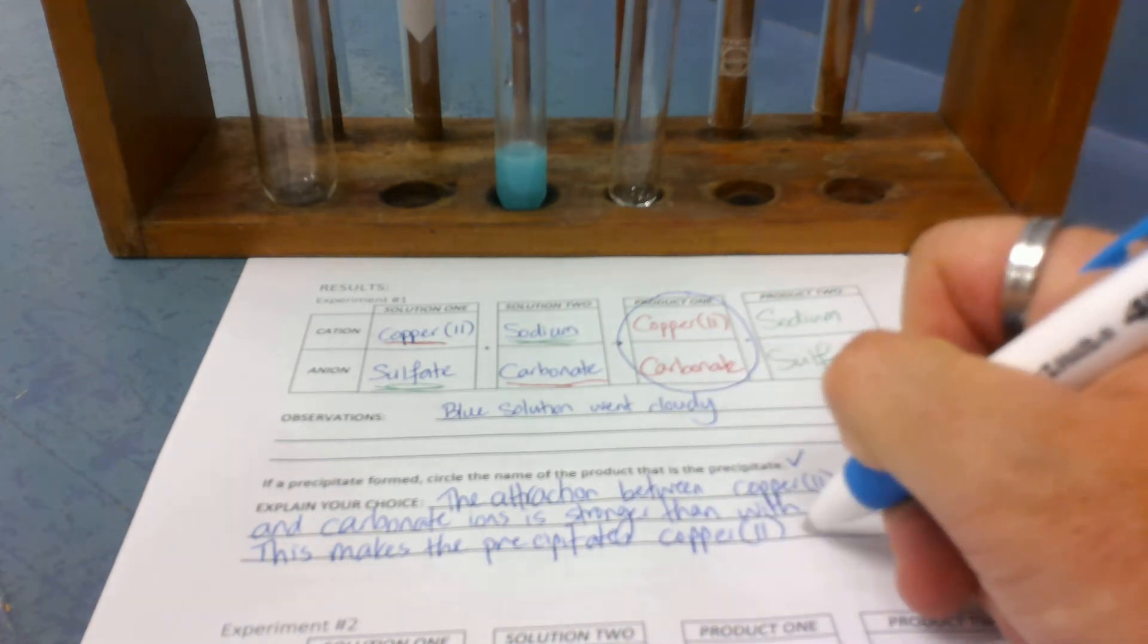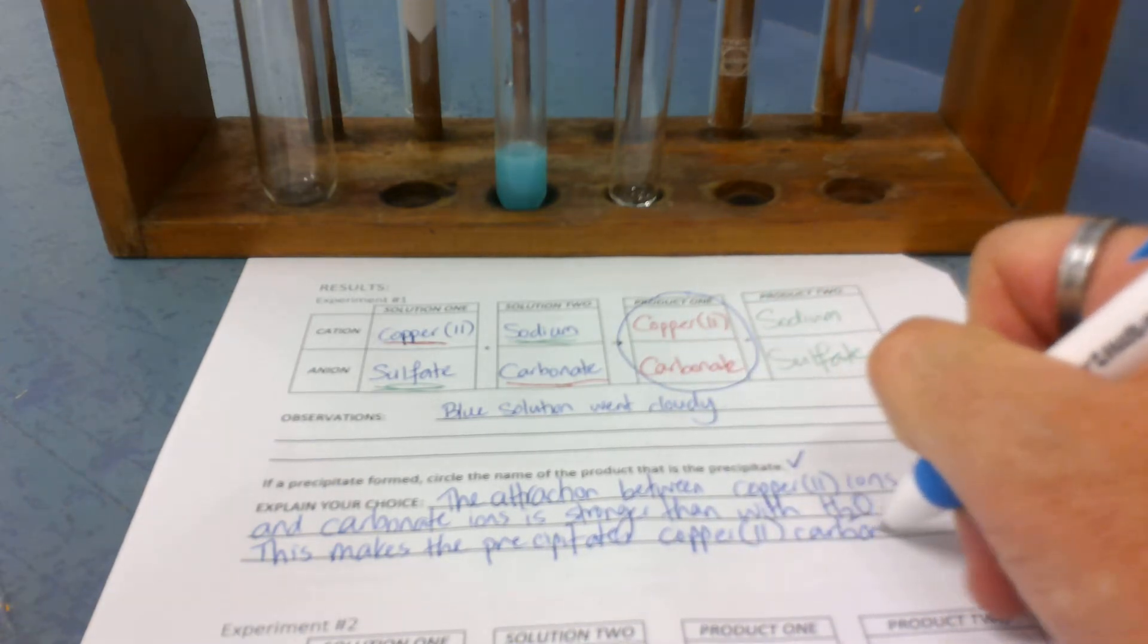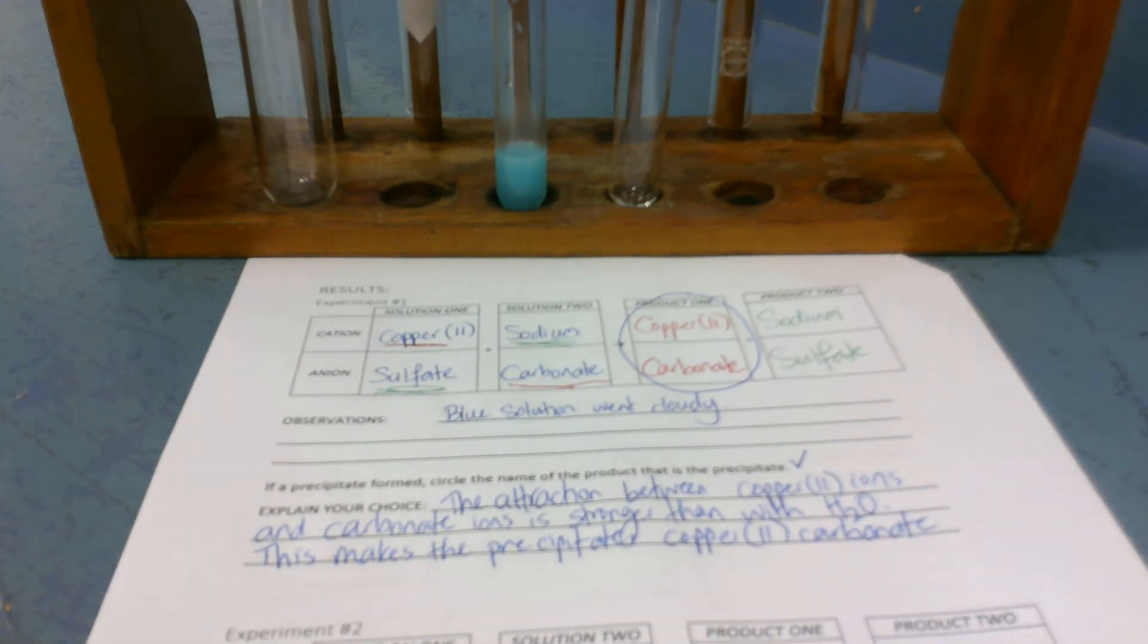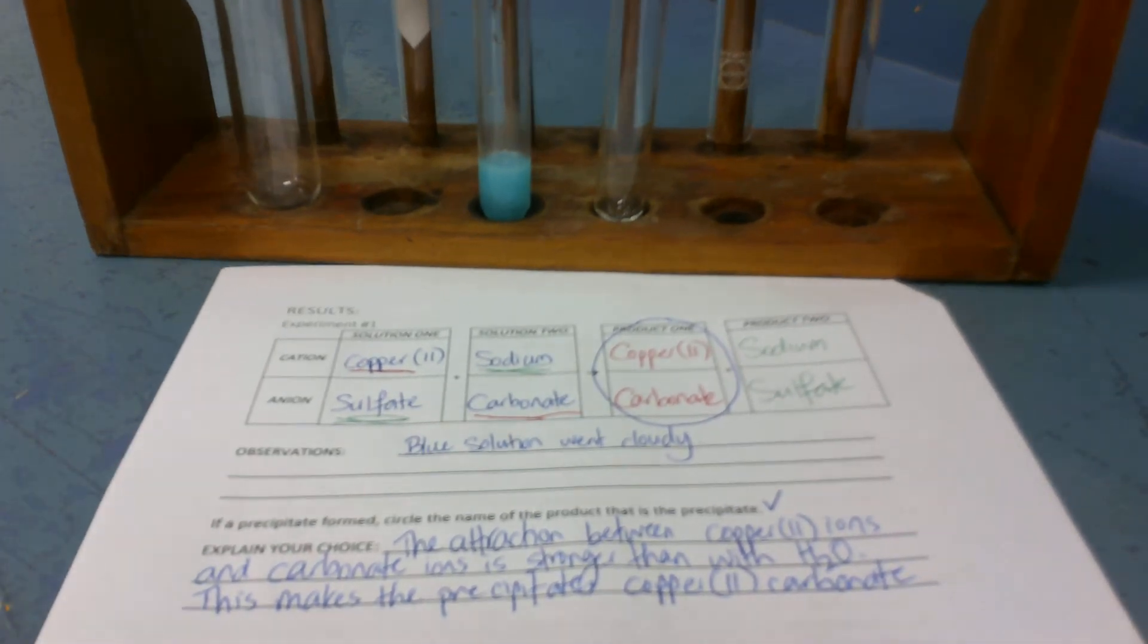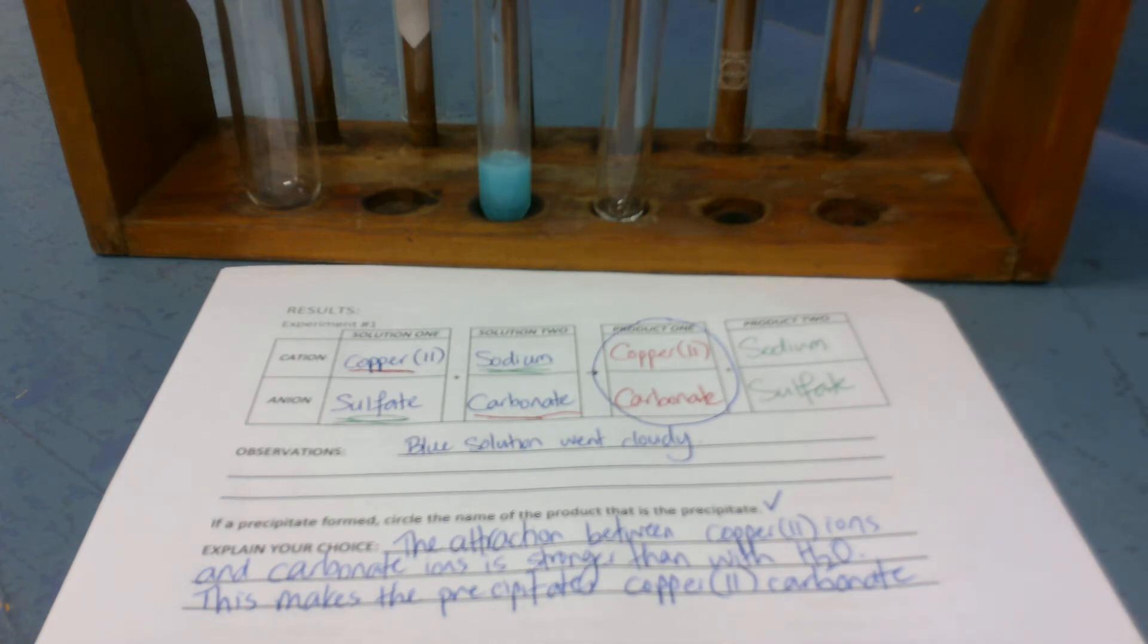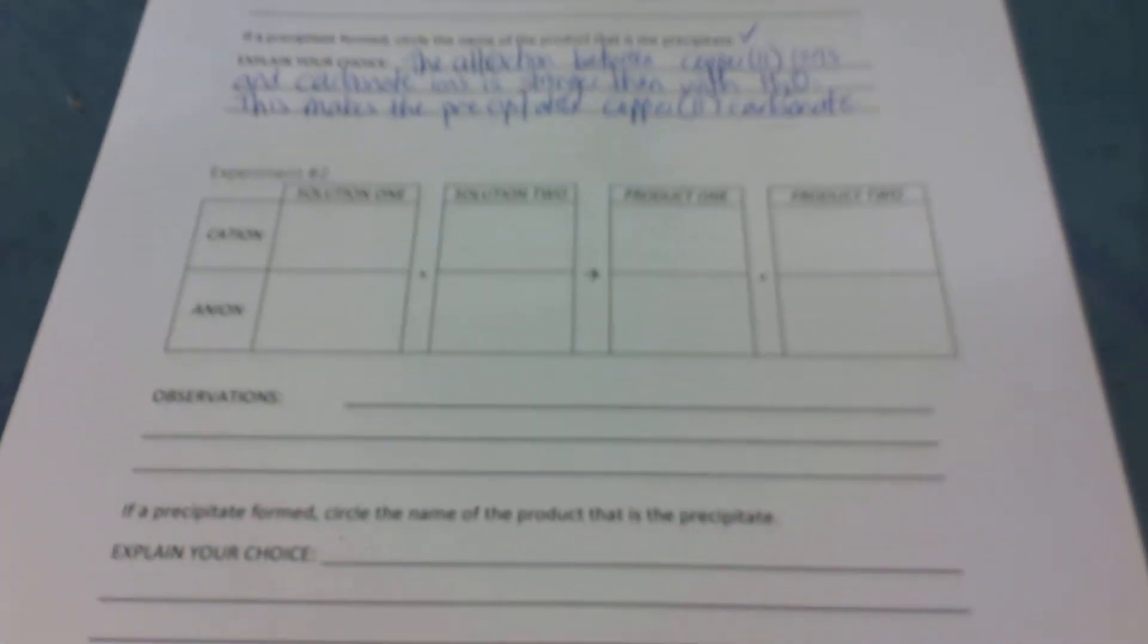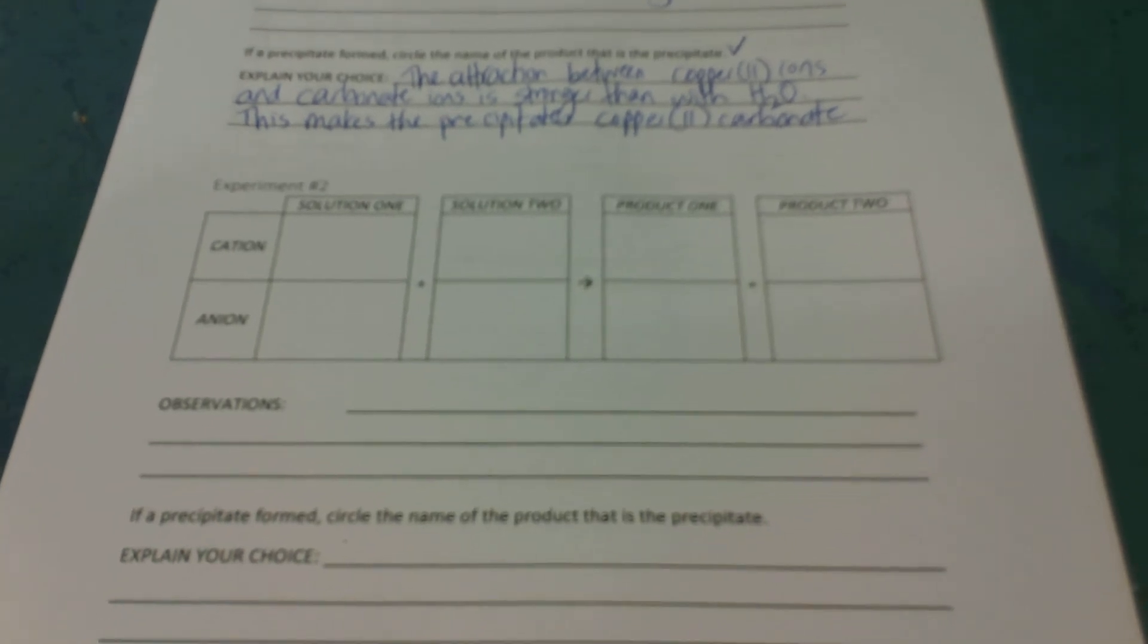This makes the precipitate copper-2 carbonate. And now we've finished this first bit of understanding on why a precipitate forms. You get to choose any two chemicals from the front page to mix together to do for experiment 2. And then if you go over the page, 3 and 4 and 5 and 6. Are there any questions on what you have to do there?